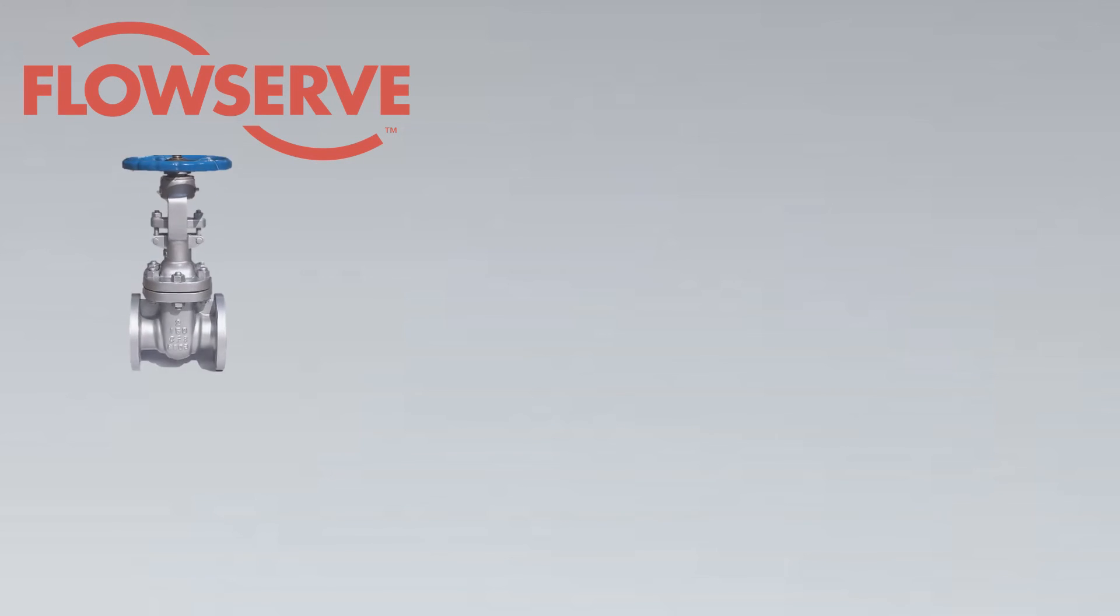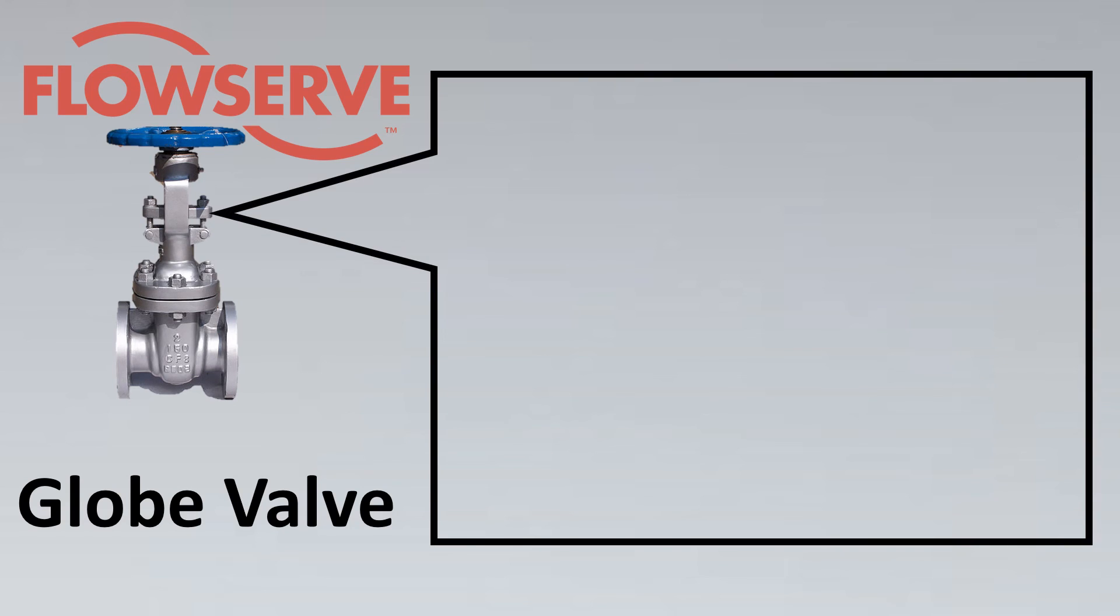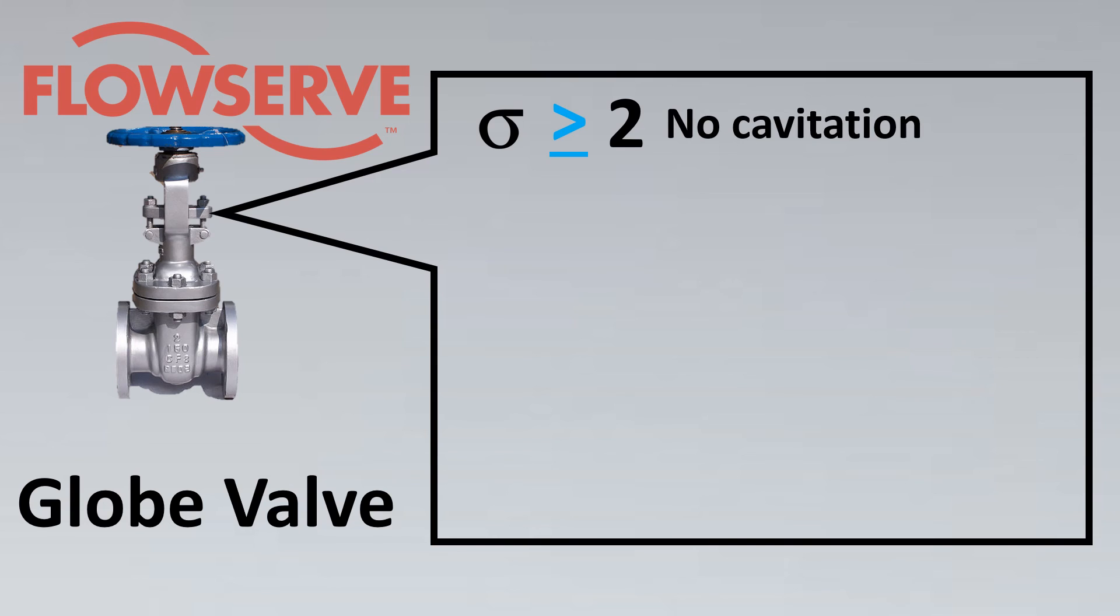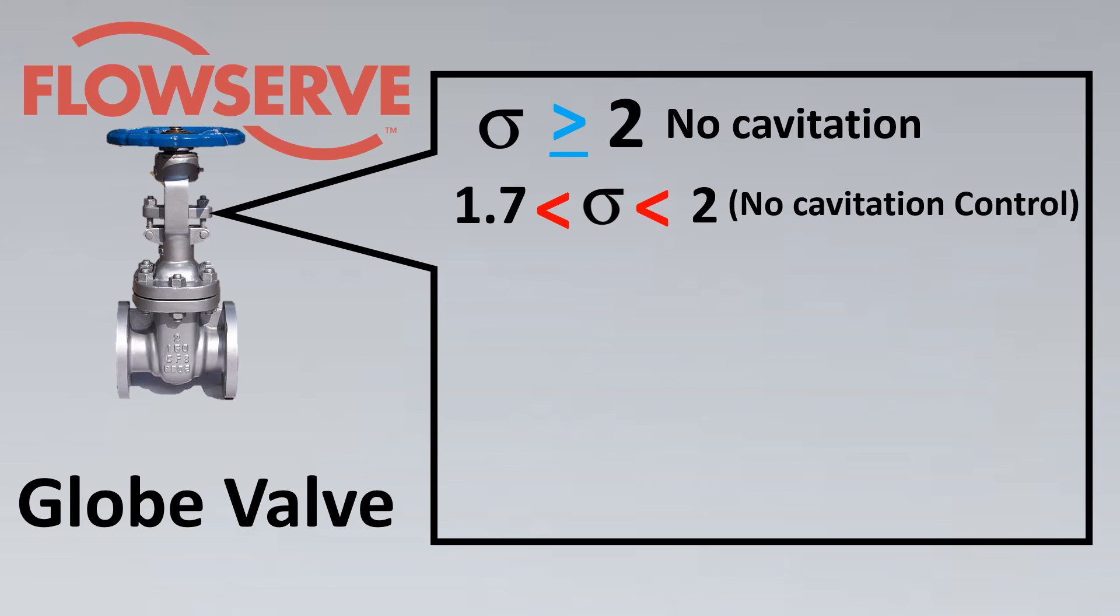Now we look into an actual example from Flow Serve globe valve. This would make things actually interesting and understand the real world phenomenon. For this globe valve, what the vendor has given in their catalogs is that if the sigma value is greater than 2, there is no cavitation happening.